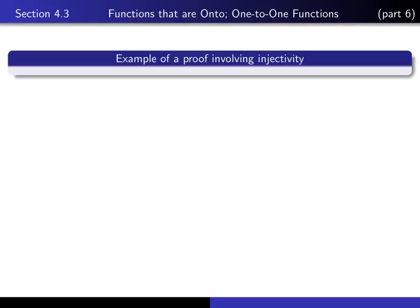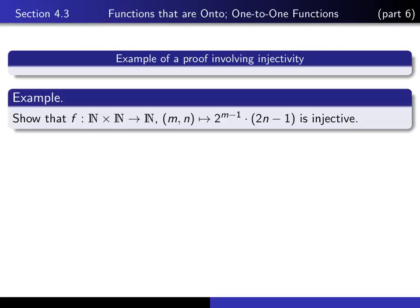This is part 6 in our series of lectures on section 4.3. In this lecture I'm going to give an example of a proof involving injectivity. This is a function that we considered in an earlier video — the function from ℕ×ℕ into ℕ, which maps the ordered pair (m, n) to 2^(m-1) times (2n-1). The exercise is to prove that this is an injective function.